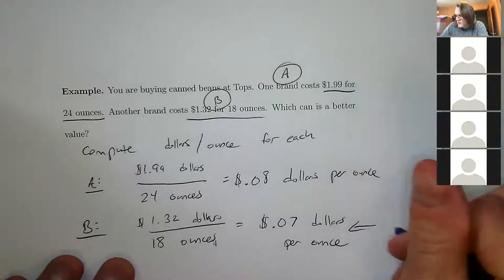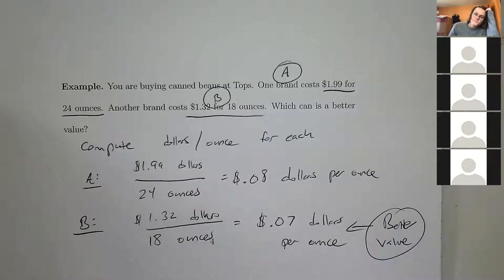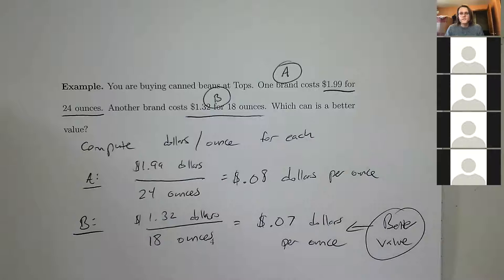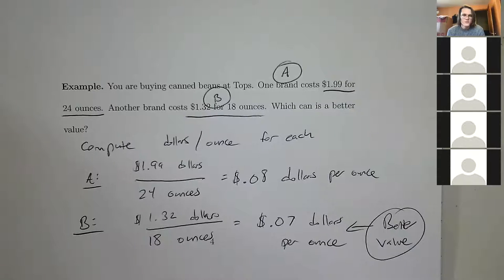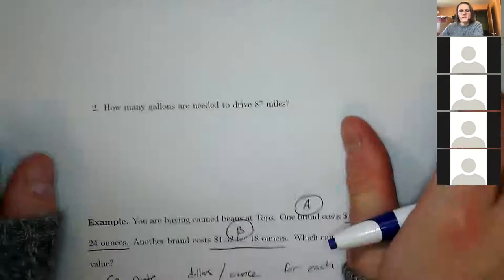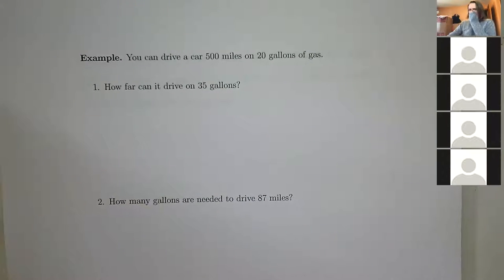If you did ounces per dollar instead, you'd look for the bigger number — more ounces per dollar means better value. Either approach works as long as you interpret correctly.